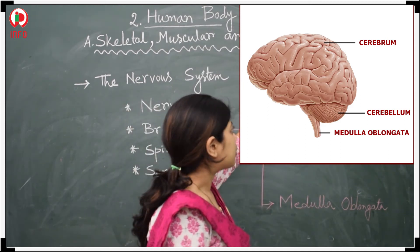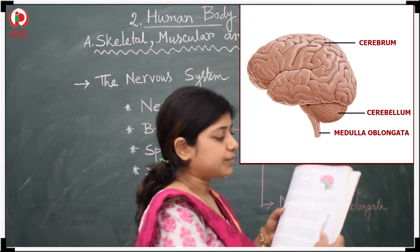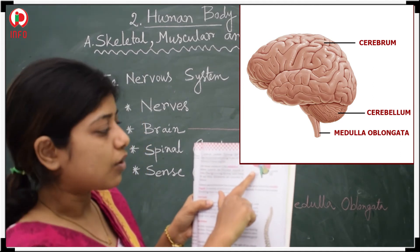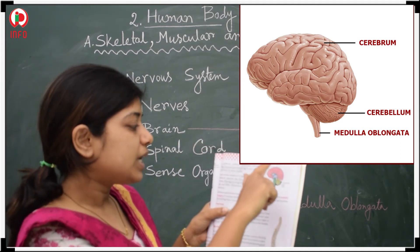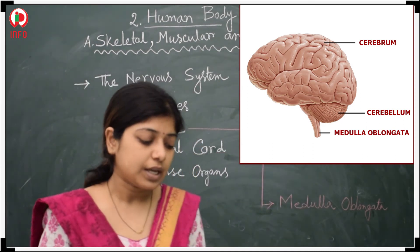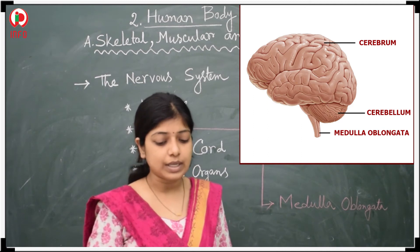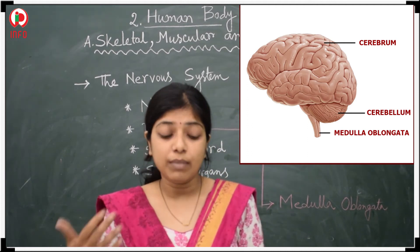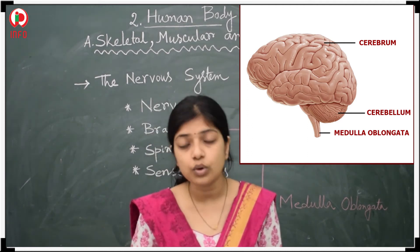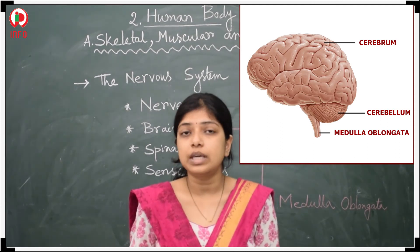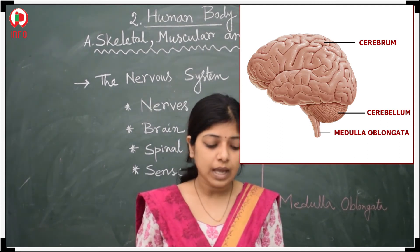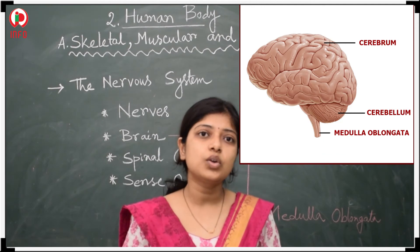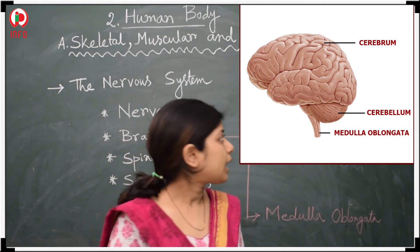Let us talk about the cerebrum. Look at the picture — the red color portion is called the cerebrum. It is the largest part of our brain structure. The cerebrum helps us in thinking, learning, and memory. Intelligence is also being controlled with the help of this part. We are able to talk with the help of this part, and it also controls the functions of different sense organs.